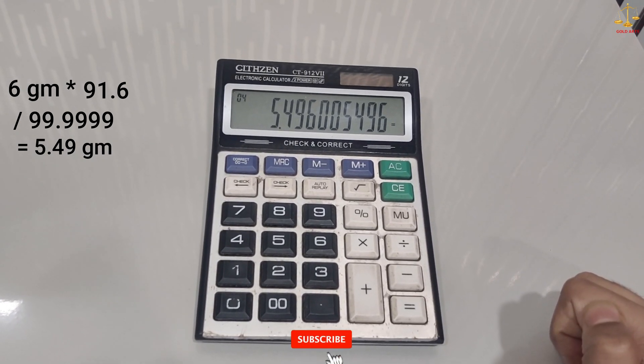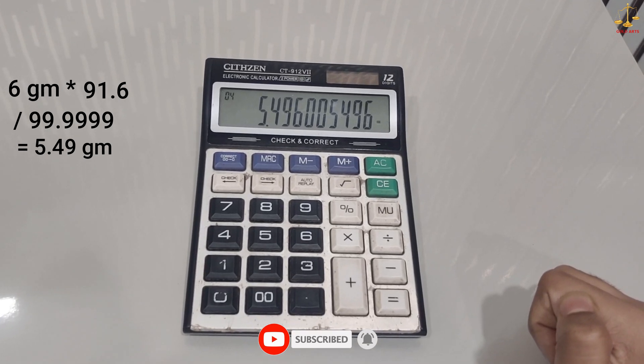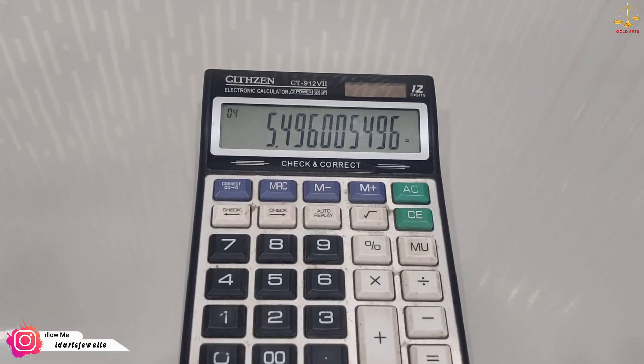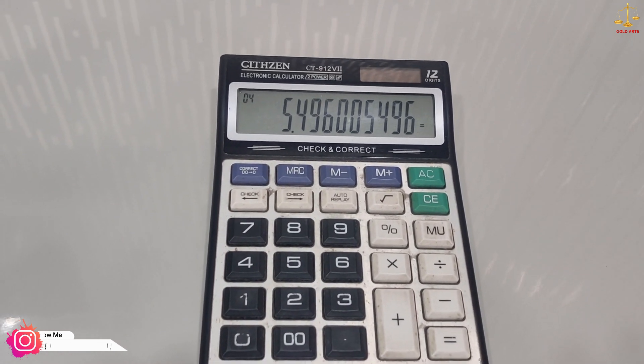This means that for exchanging 6 grams of 22 karat jewelry, we will need 5.49 grams of 99.9999% purity gold coins. I hope I was able to simplify the calculations for you. If you have any doubt, you can comment below.